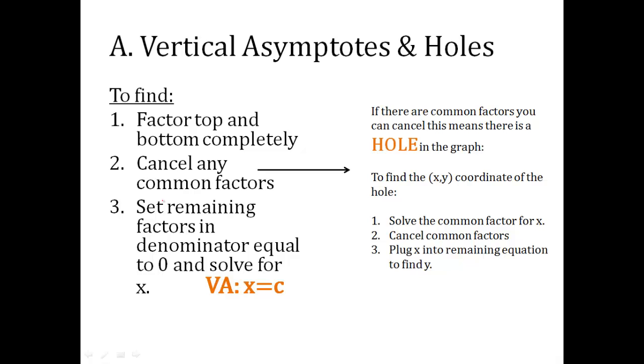Vertical asymptotes. To find a vertical asymptote, you're going to factor the top and the bottom completely. Cancel any common factors. We'll talk about this other side over here in a minute.